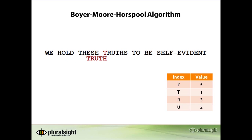Now we are comparing the letter h in truth with the letter t in 'truths'. This is a mismatch, but unlike before, the value t does exist in the bad match table with a value of 1. What happens now is that we are aligning the mismatch t with the t in the string truth, so we slide one character to the right.